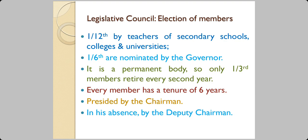The remaining one-sixth are nominated by the governor. The Legislative Council is a permanent body, and for that reason only one-third of the members retire every second year. This makes every MLC's tenure six years as a member of the Legislative Council. The Legislative Council is presided over by the chairman, and if he is absent, the deputy chairman takes care of meetings and proceedings.